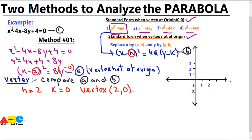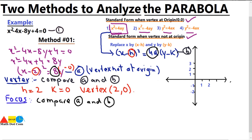This is how we find the vertex of a parabola not at the origin. For focus, we again compare equation A with equation B, specifically comparing 8 with 4a, where a is the distance of the focus from the vertex. So 4a equals 8, giving a equals 2 — meaning the focus is 2 units from the vertex.